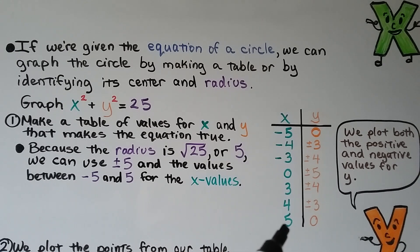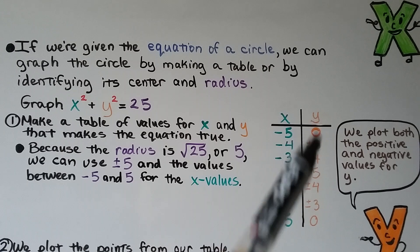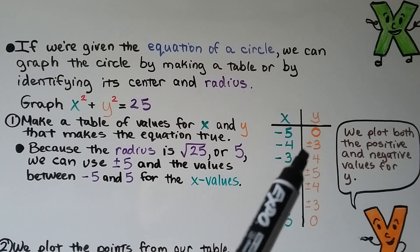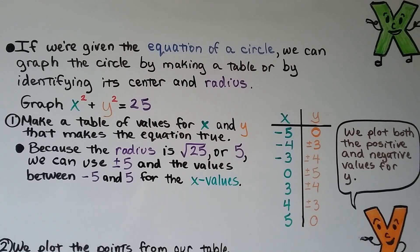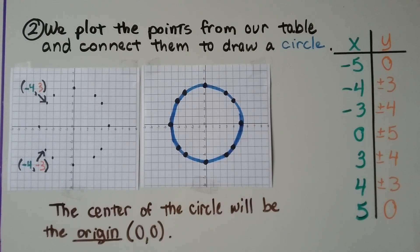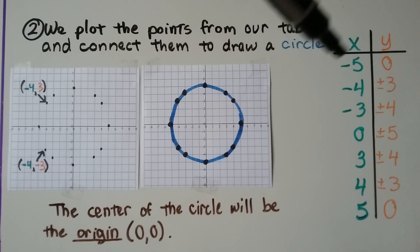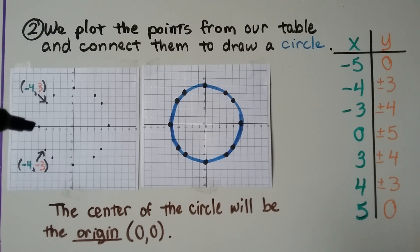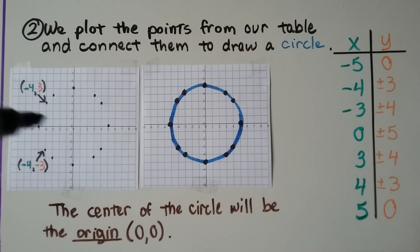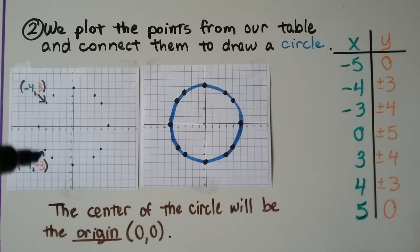So we start with negative 5. We're going to go all the way to positive 5 for the x values. For the y values, we're going to plot both the positive and negative values for y. So we have a plus minus 3, plus minus 4, and so on. We plot the points from our table and connect them to draw a circle. So for our first point, we have x as a negative 5 and y as a 0. That's going to be plotted right here. The next one is going to be negative 4 for x and a plus and minus 3 for y. So here's negative 4 for x. We plot the positive 3 and the negative 3. So we have two y values here.